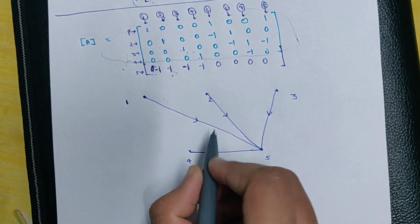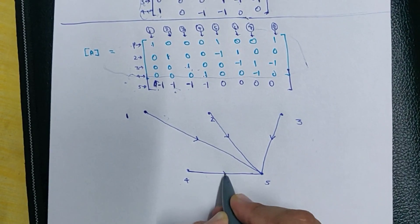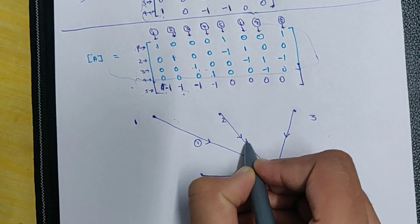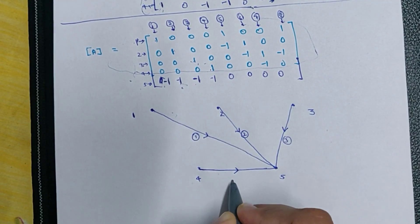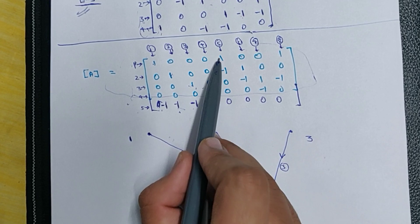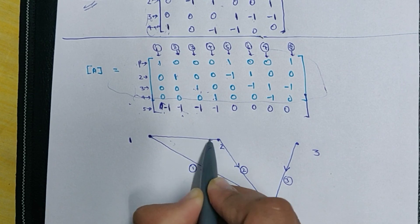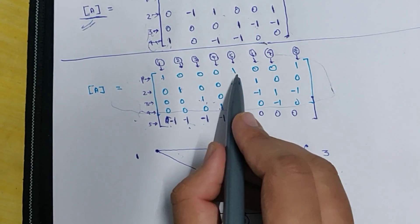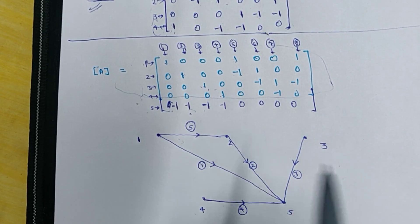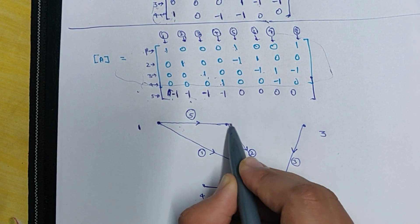You must name the branches simultaneously to avoid confusion. For the fifth branch, it is from node 1 to node 2. The current is flowing from node 1 to node 2, therefore the direction of current will be from 1 to 2. This is the fifth branch. For the sixth branch, it is from node 2 to node 3, and the current is from node 2 to node 3.